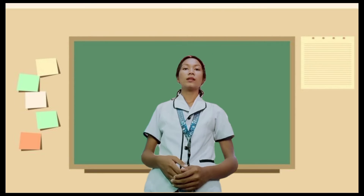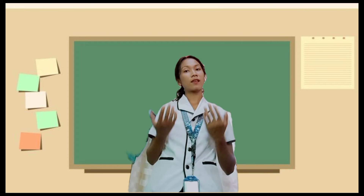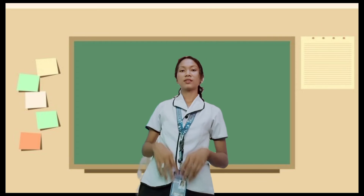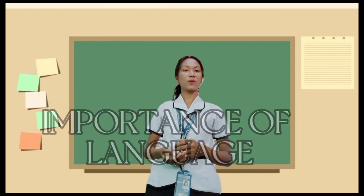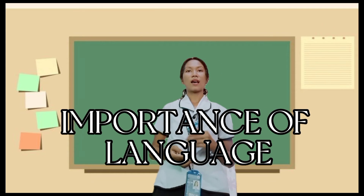So these three — verbal, non-verbal, and visual — are the ways of communicating with others. We are more likely to use a combination of these three to convey meaning. Now let's move on to the importance of language.